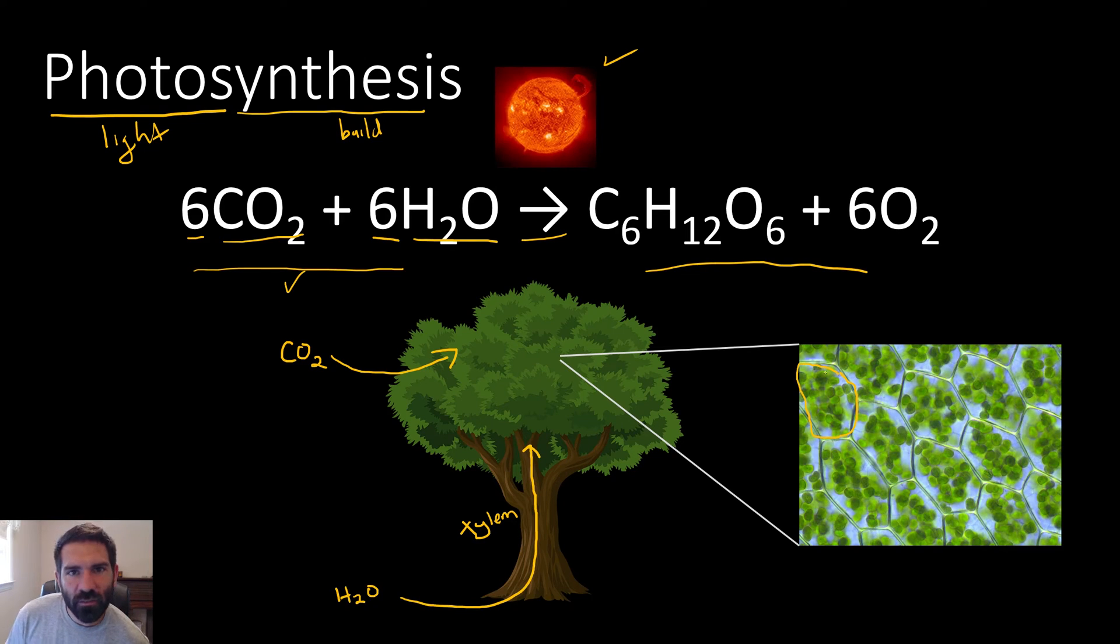You can tell this cell does photosynthesis because it contains these green organelles called chloroplasts. Look, they're all packed tightly in here. There are lots of chloroplasts doing lots of photosynthesis.